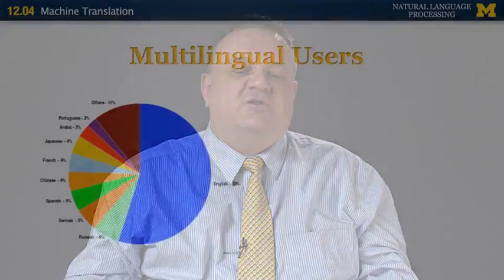Why is it important? Well, there are more than 7,000 languages in the world. It turns out that the majority of documents on the web are in English — about 55%, as you can see from this diagram. Then you have small segments in languages like Russian, German, Spanish, Chinese, and French, with the remaining close to 7,000 languages accounting for only 11%.